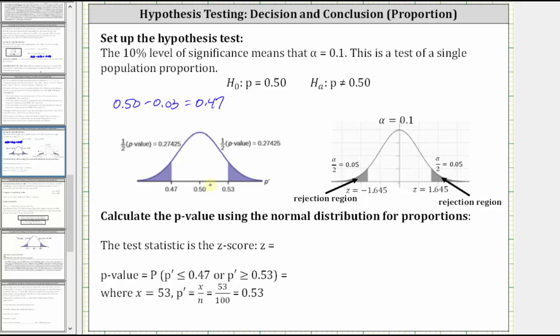This also indicates that the P value is equal to the probability that P prime is less than or equal to 0.47 on the left, or P prime is greater than or equal to 0.53 on the right.